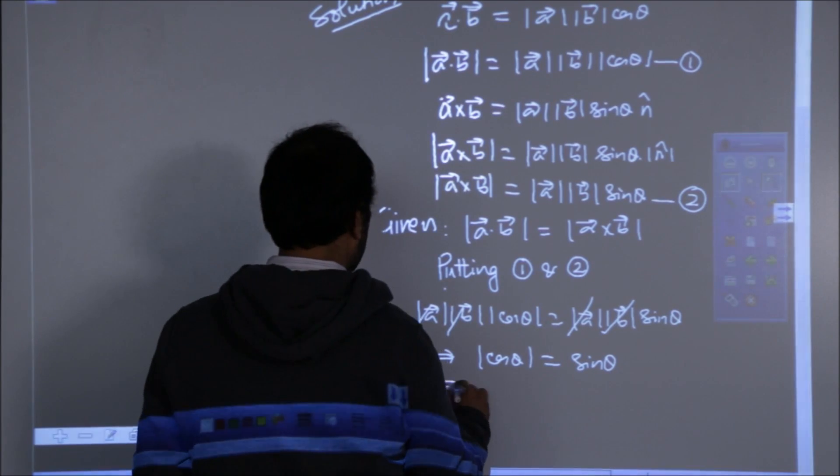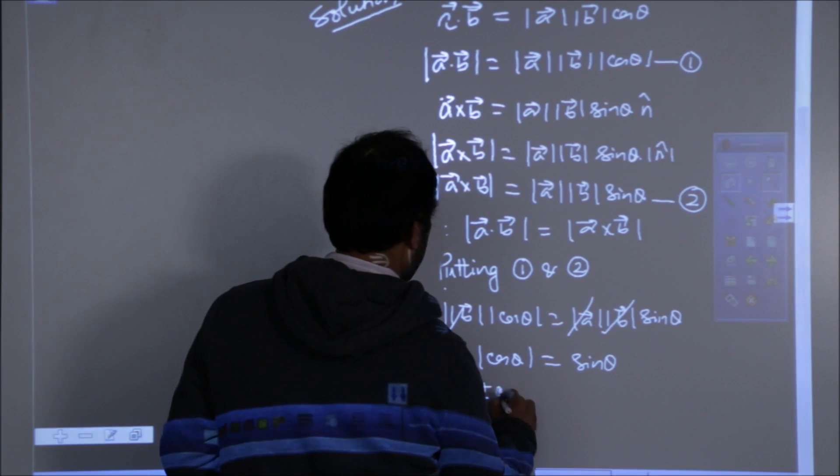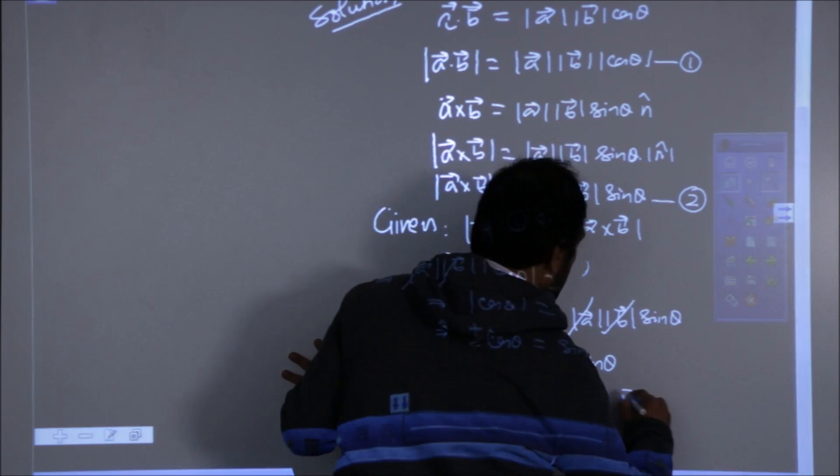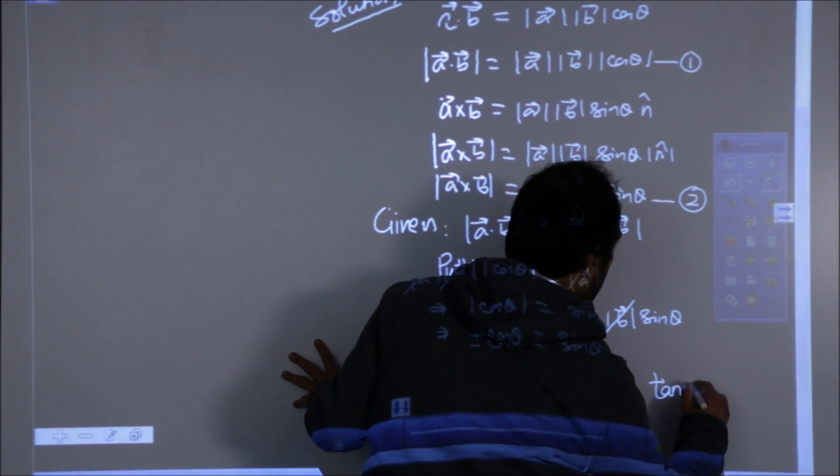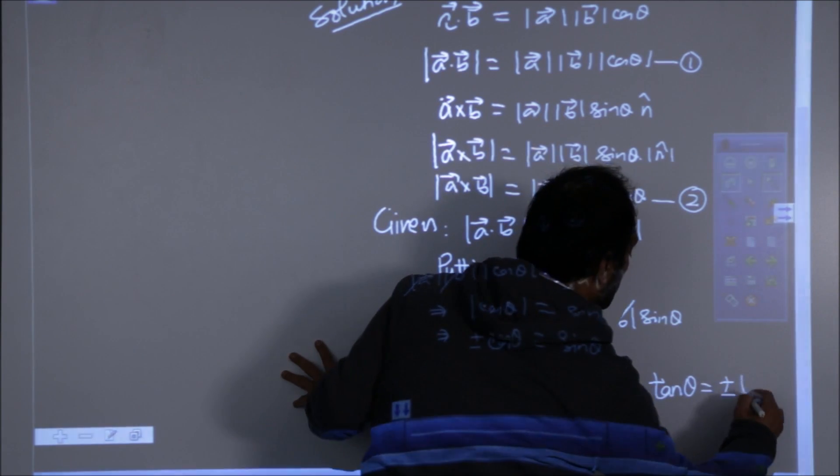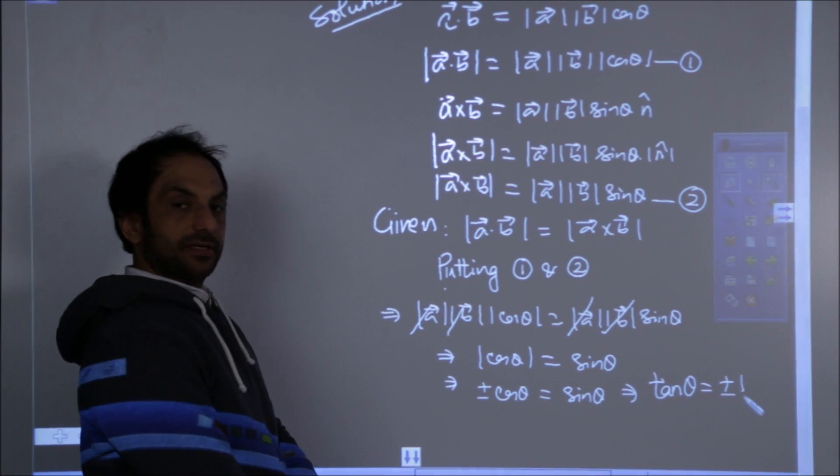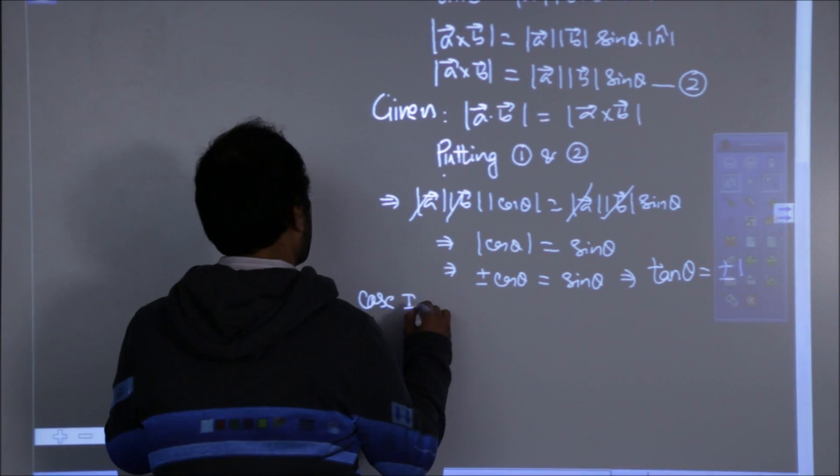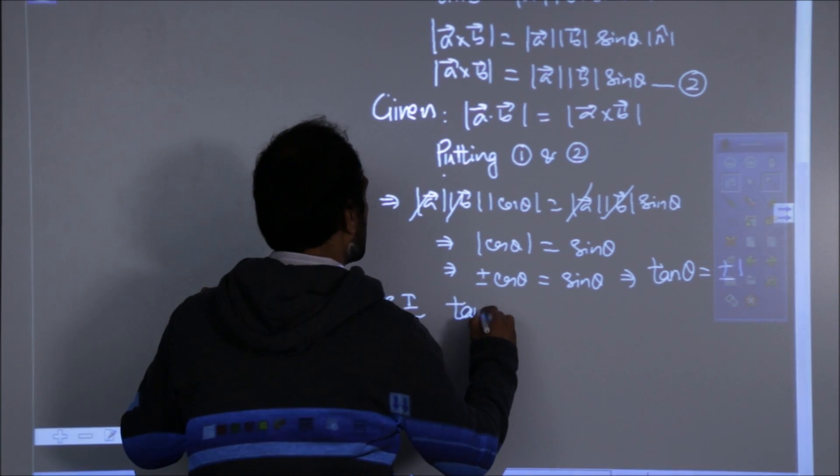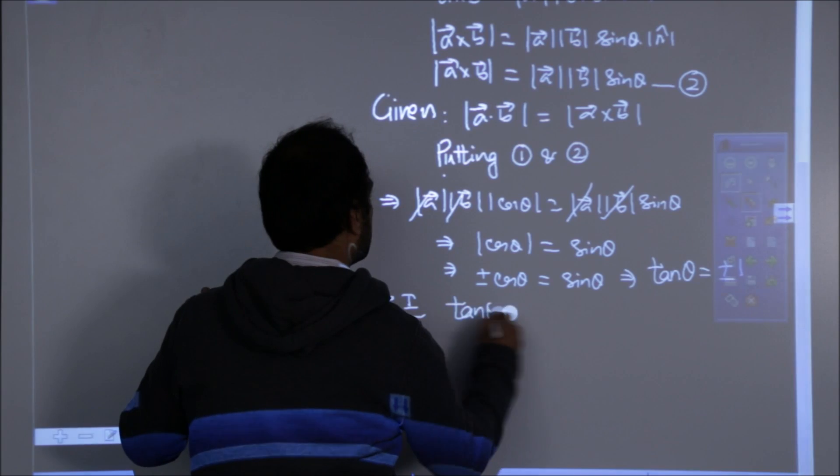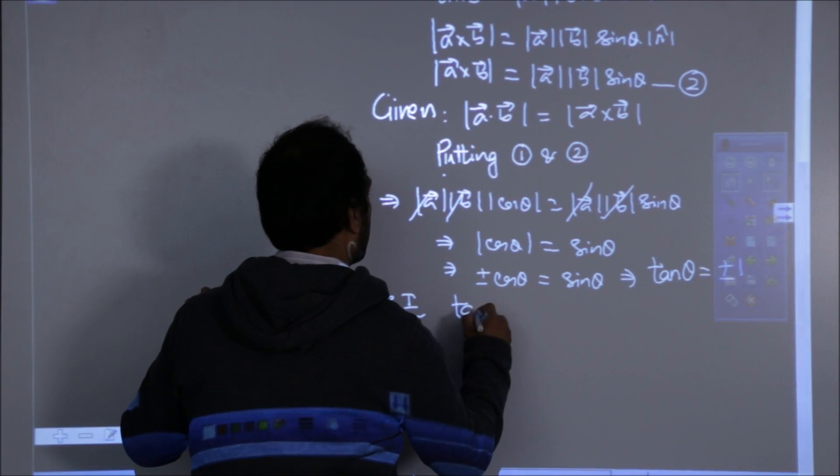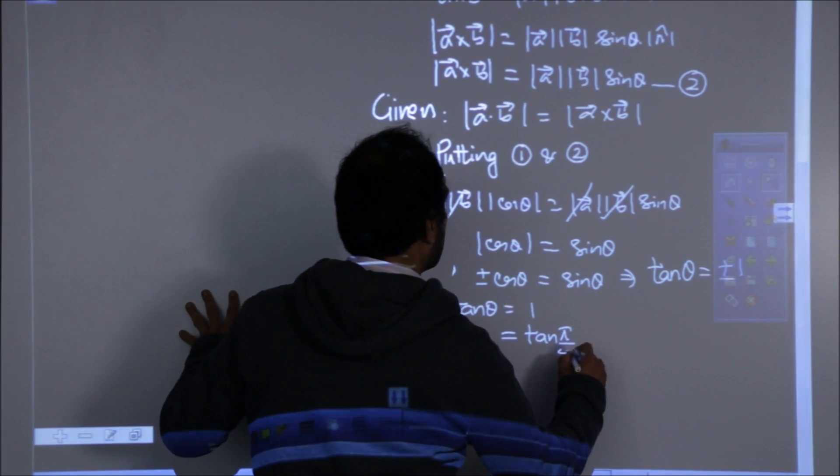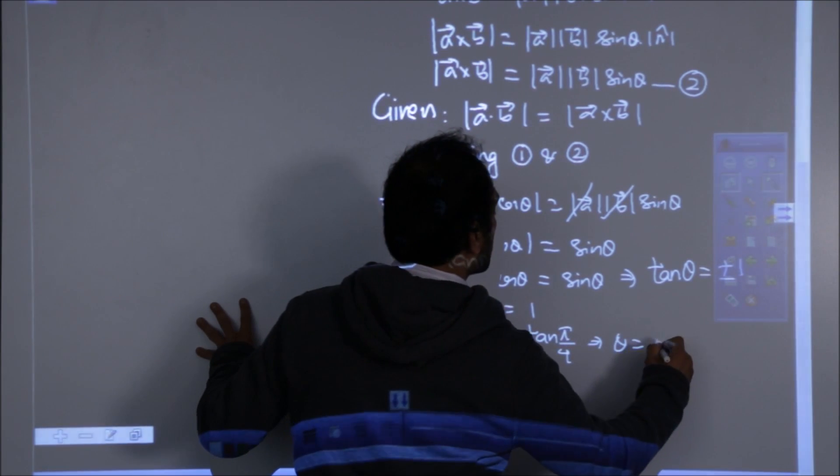As I remove mod from cos, this implies that tan theta is plus minus one. Case one, when tan theta is one, that is tan pi by four, so clearly theta is pi by four.